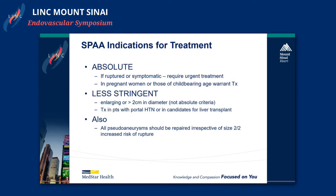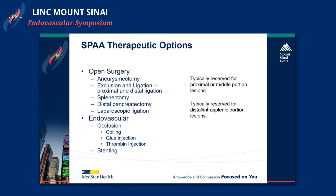Indications for repair of splenic artery aneurysms: obviously an absolute indication if you're ruptured or symptomatic, and in pregnant women or those who want to have children or are of childbearing age, treatment is warranted. Less stringent indications are enlarging aneurysms or greater than 2 centimeters — though whether that's really absolute is debatable — and also in patients with portal hypertension or candidates for liver transplantation. All pseudoaneurysms should be repaired irrespective of size, secondary to increased risk of rupture.